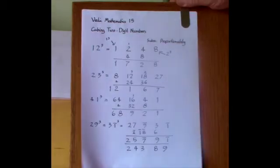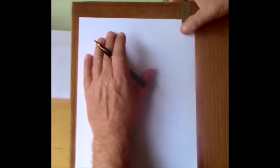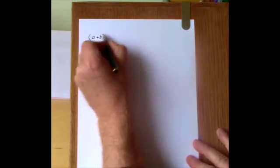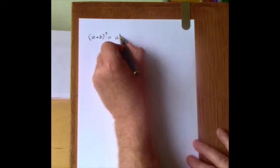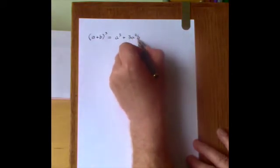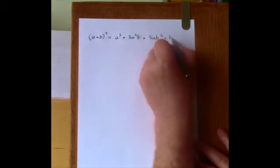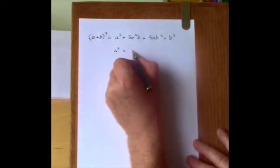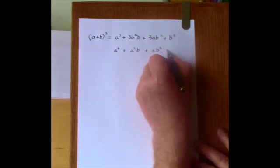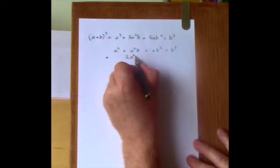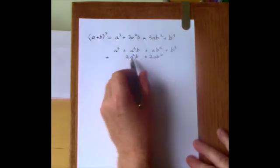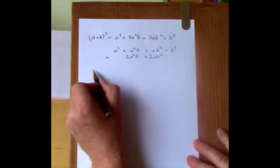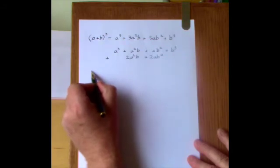How does this work? It's a delightful method, and the important thing really is the mathematics behind it. It is based on the binomial expansion. Because if we have a two-termed expression, a plus b, and you cube it, you get a³ + 3a²b + 3ab² + b³. We could separate this out into two sums: a³ + a²b + ab² + b³, plus 2 lots of a²b plus 2 lots of ab². And you can see here where the doubling comes from. If you compare that with one of the numerical examples, you'll see how it fits.